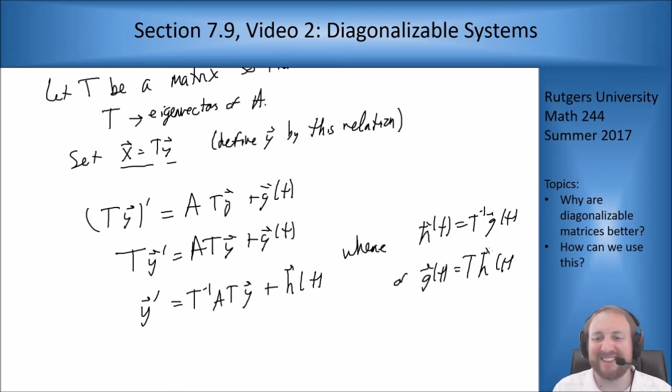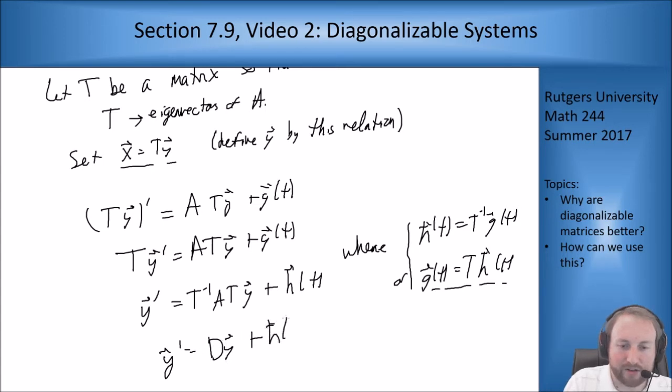Now in general you're going to have to solve a system of equations to get this h, but you can get it via these relations over here. If you know T inverse, just multiply by T inverse. If you don't, you can solve the linear system here to get h.